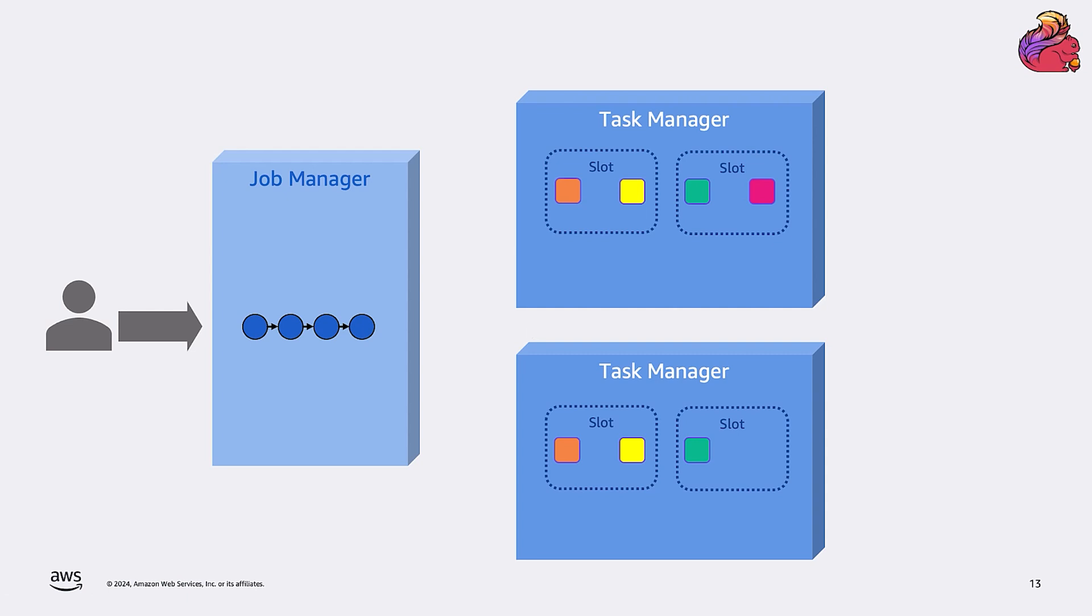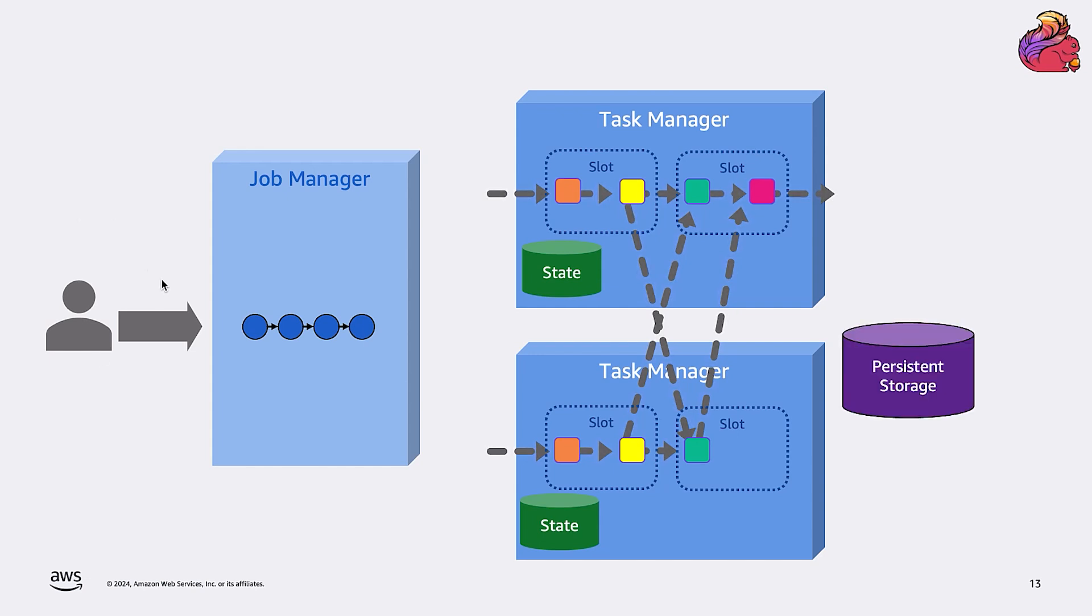And what Flink does is try to evenly, as evenly as possible, distribute them across all the slots and all the task managers. And when the deployment is complete, the application starts processing. And remember, the state of all subtasks is stored locally in the memory and in the disk of the task manager holding the subtask. And finally, the checkpoint mechanism periodically takes a consistent snapshot of the state from all the task managers, saving it to the external persistent storage. Checkpointing is coordinated by the job manager, but each task manager and each subtask takes its own checkpoint independently and in parallel, and without stopping the data.